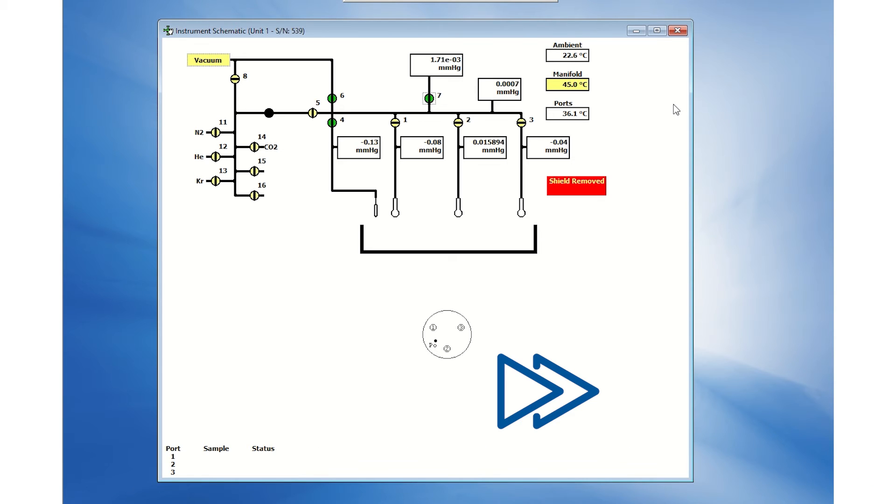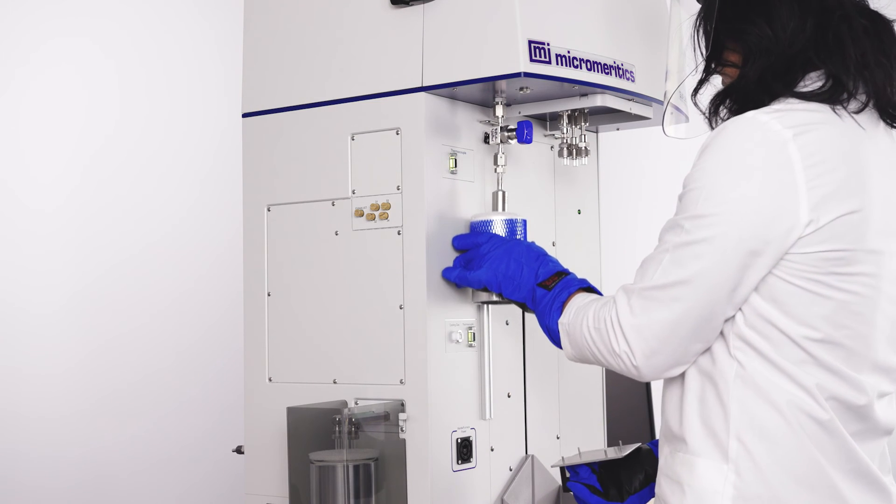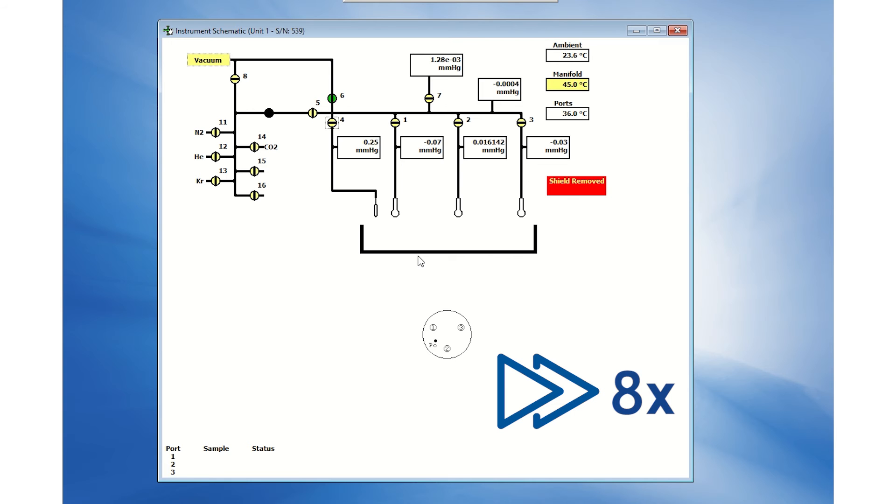Once the pressure stabilizes, close valve 4 and 7 on the schematic and remove the cryogen bath. Let the reservoir thaw. A gradual increase in pressure on the schematic indicates the vapor thawing.